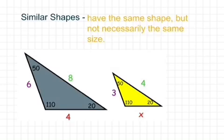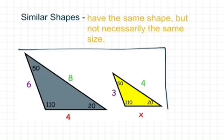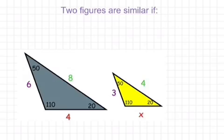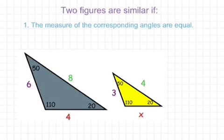Similar shapes have the same shape, but not necessarily the same size. So kind of a broad definition here, but you would refer to these two triangles here as similar shapes. So two figures are similar if, similar meaning they're alike. They are similar if, one, the measure of the corresponding angles are equal.